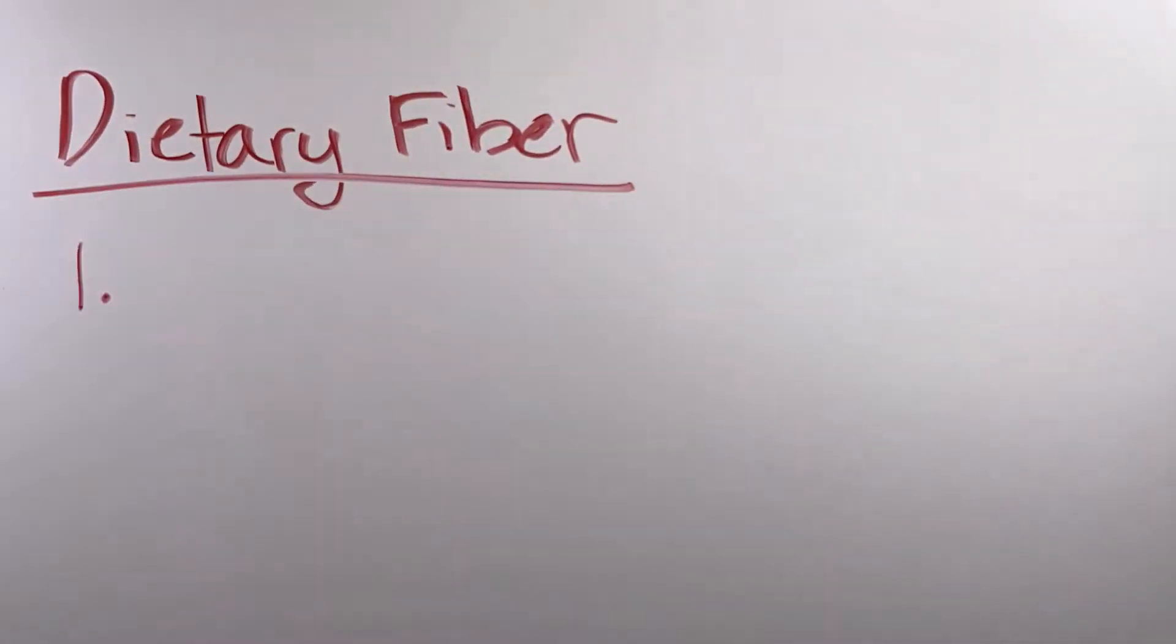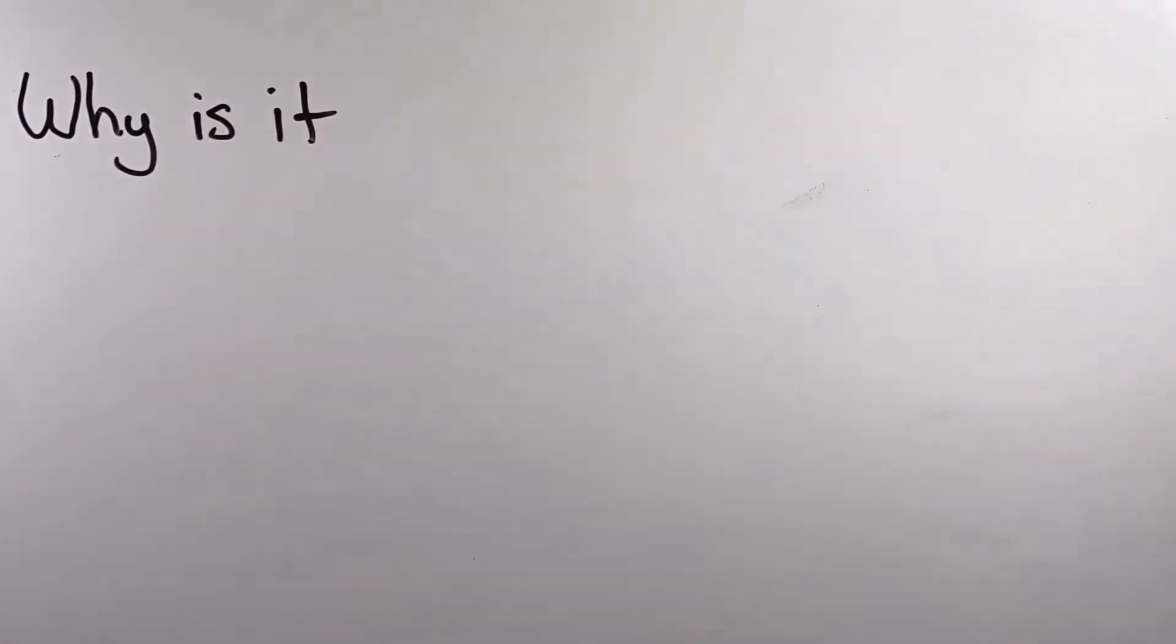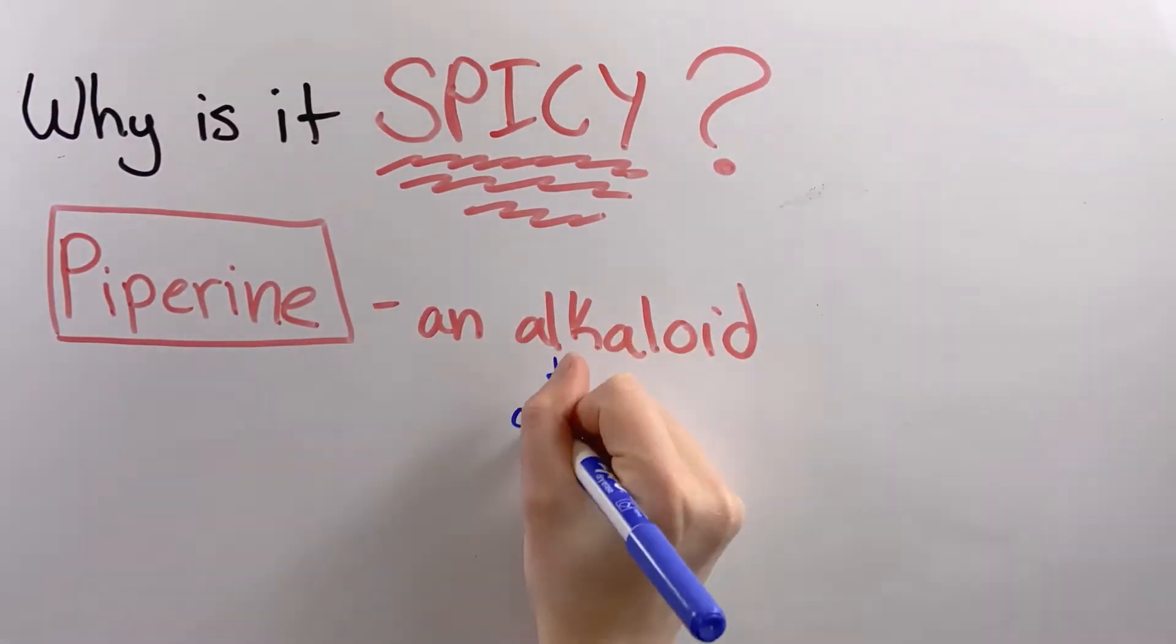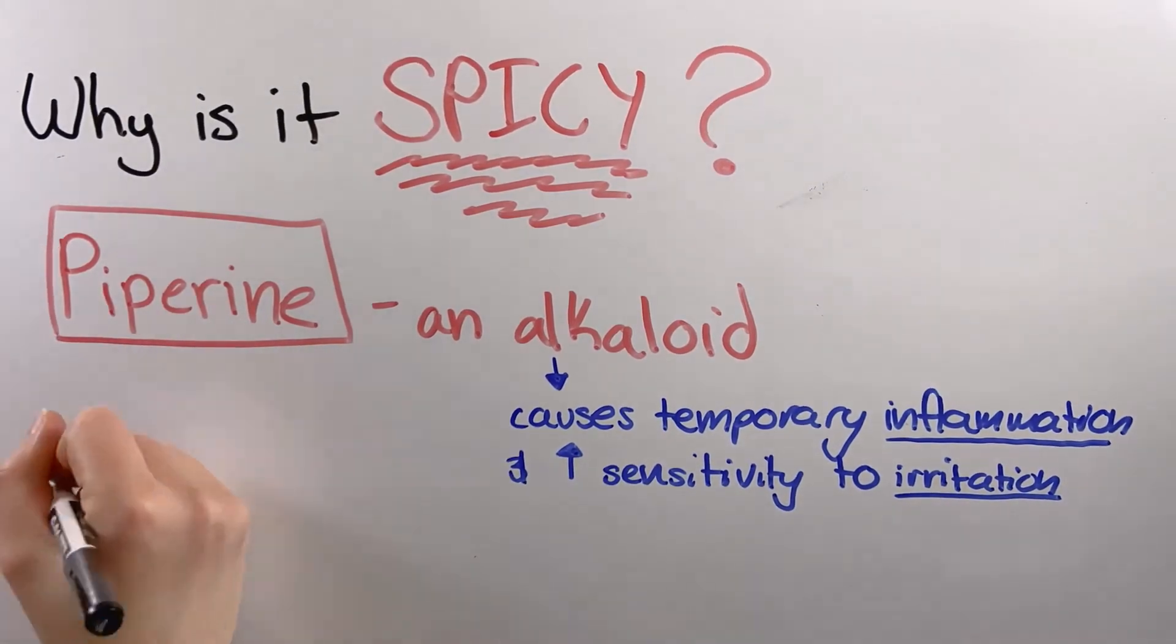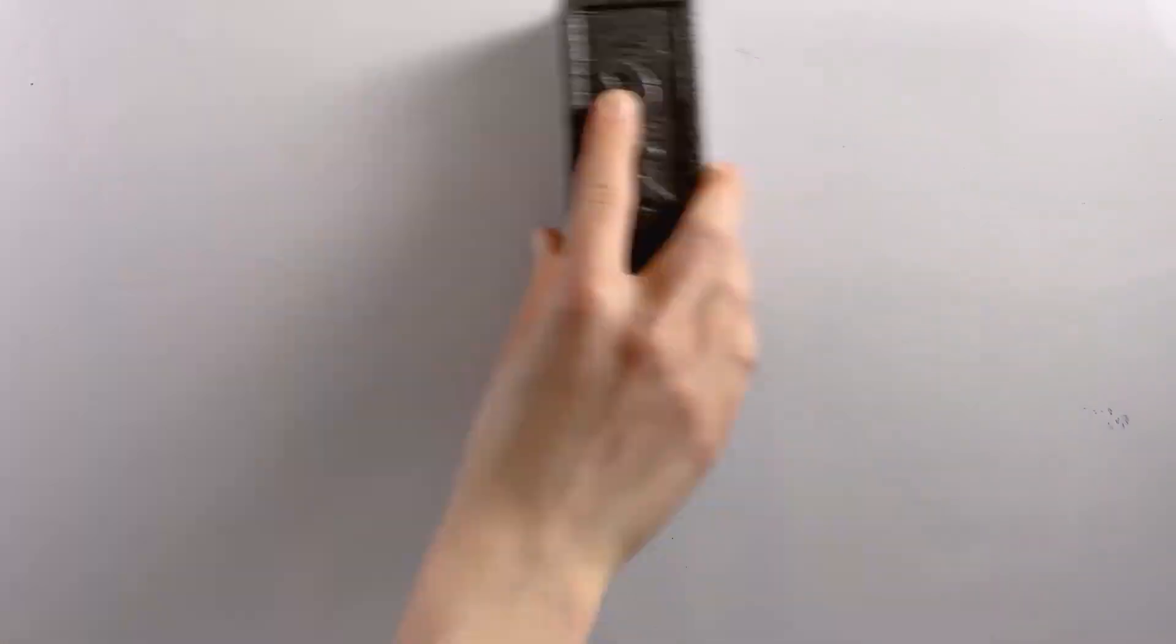Black pepper does contain some dietary fiber, which aids digestion. Black pepper's familiar pungent spice comes from an alkaloid called piperine. This molecule causes temporary inflammation and increased sensitivity to irritation in the mouth. It also diminishes sensitivity to sweet, tart, and bitter flavors.